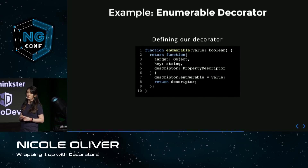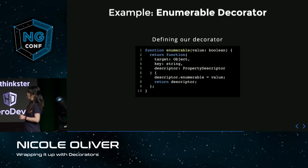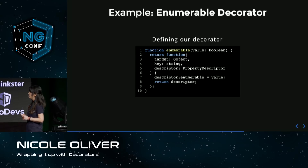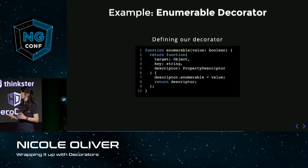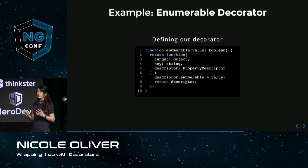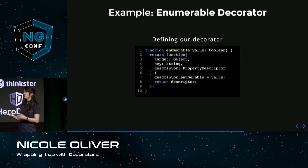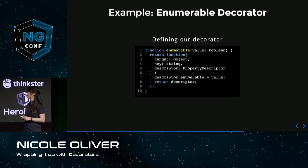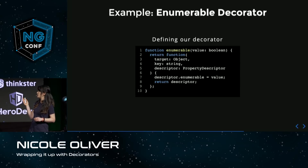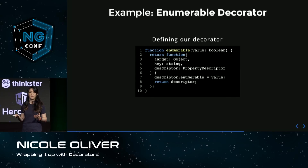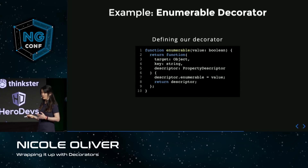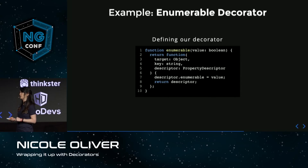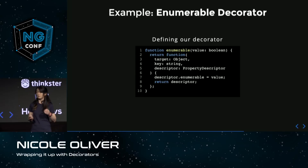What if we want to pass in a parameter to our decorator? All we need to do is change the syntax slightly using something called a decorator factory. We pass any parameters we need into an outer function, and then return the function that will be used as our decorator at runtime — that inner function has the same signature with target, key, and descriptor. Inside this decorator, we change the enumerable property descriptor to the value that was passed in, making it so a property will or won't show up in a for-in loop depending on what you pass.